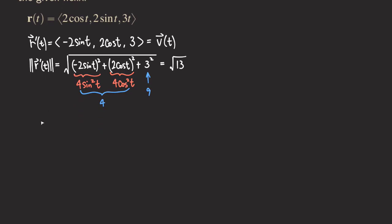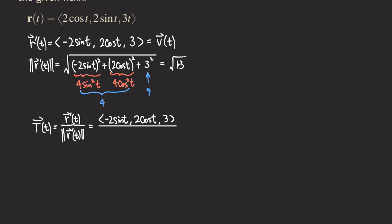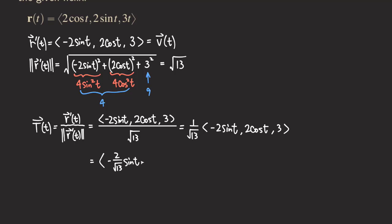Now we can find the unit tangent. The unit tangent is r prime of t over its own magnitude. We have the vector negative 2 sine of t, 2 cosine of t, and 3, in the denominator the square root of 13. We can distribute the 1 over square root of 13 into each component, giving us negative 2 over square root of 13 times sine of t, and so on. That is the unit tangent.